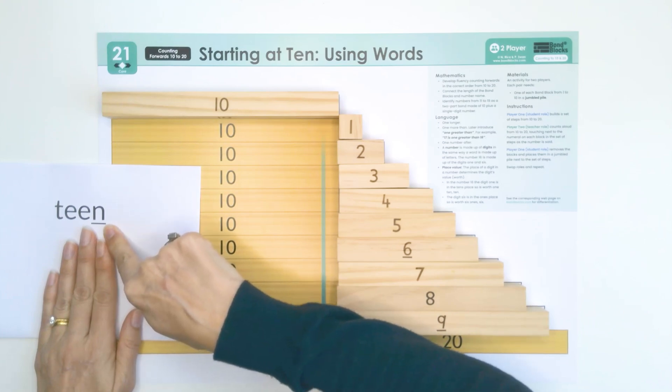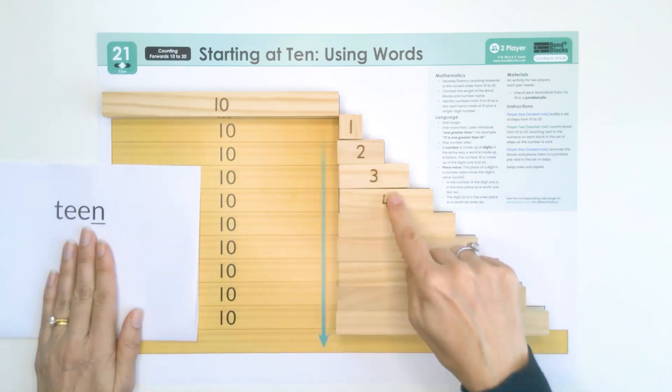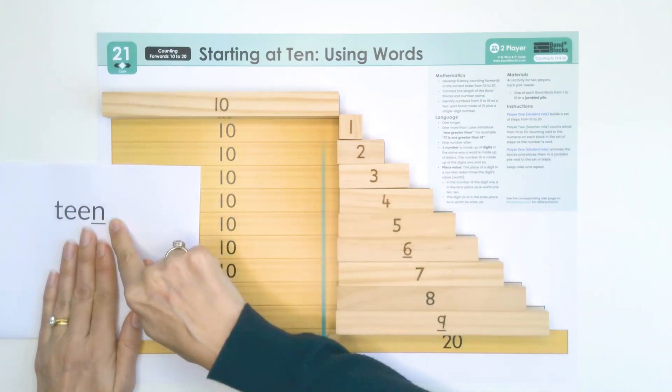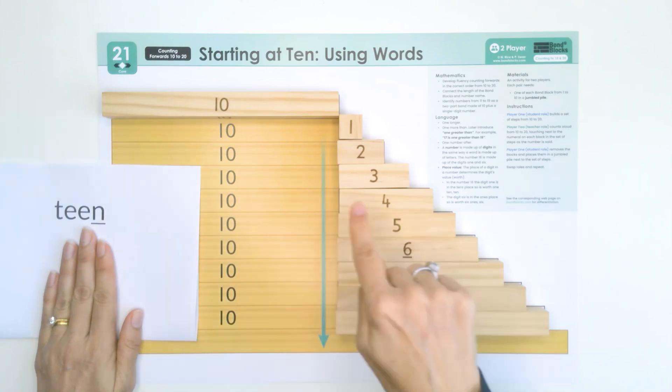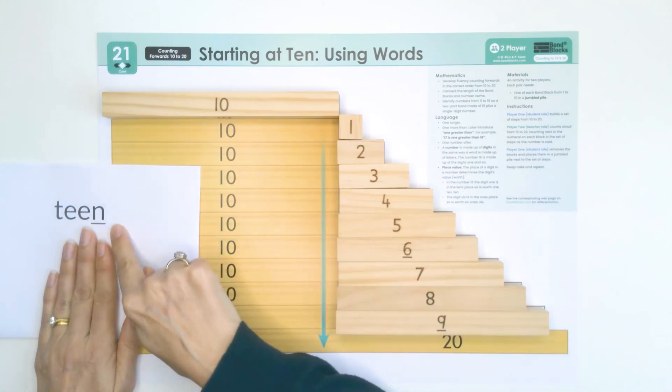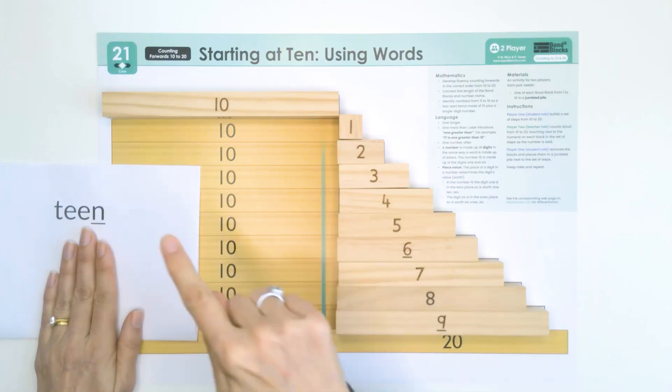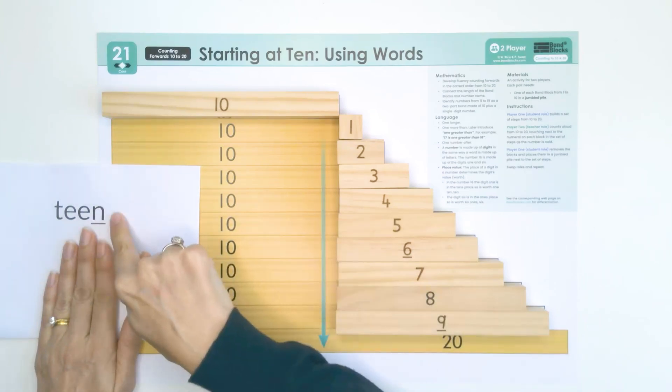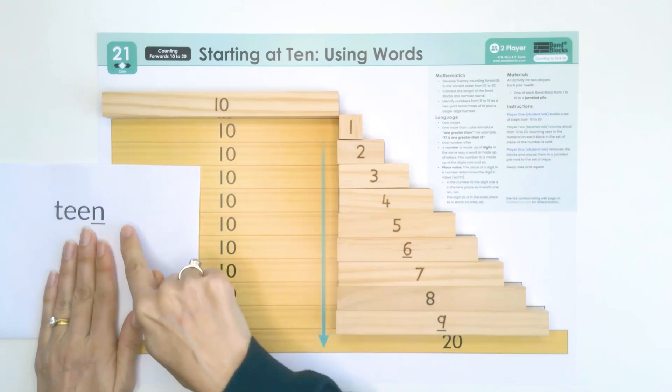I want to hear that N on the end. Fourteen. Fifteen. Sixteen. Seventeen. Eighteen. Nineteen.